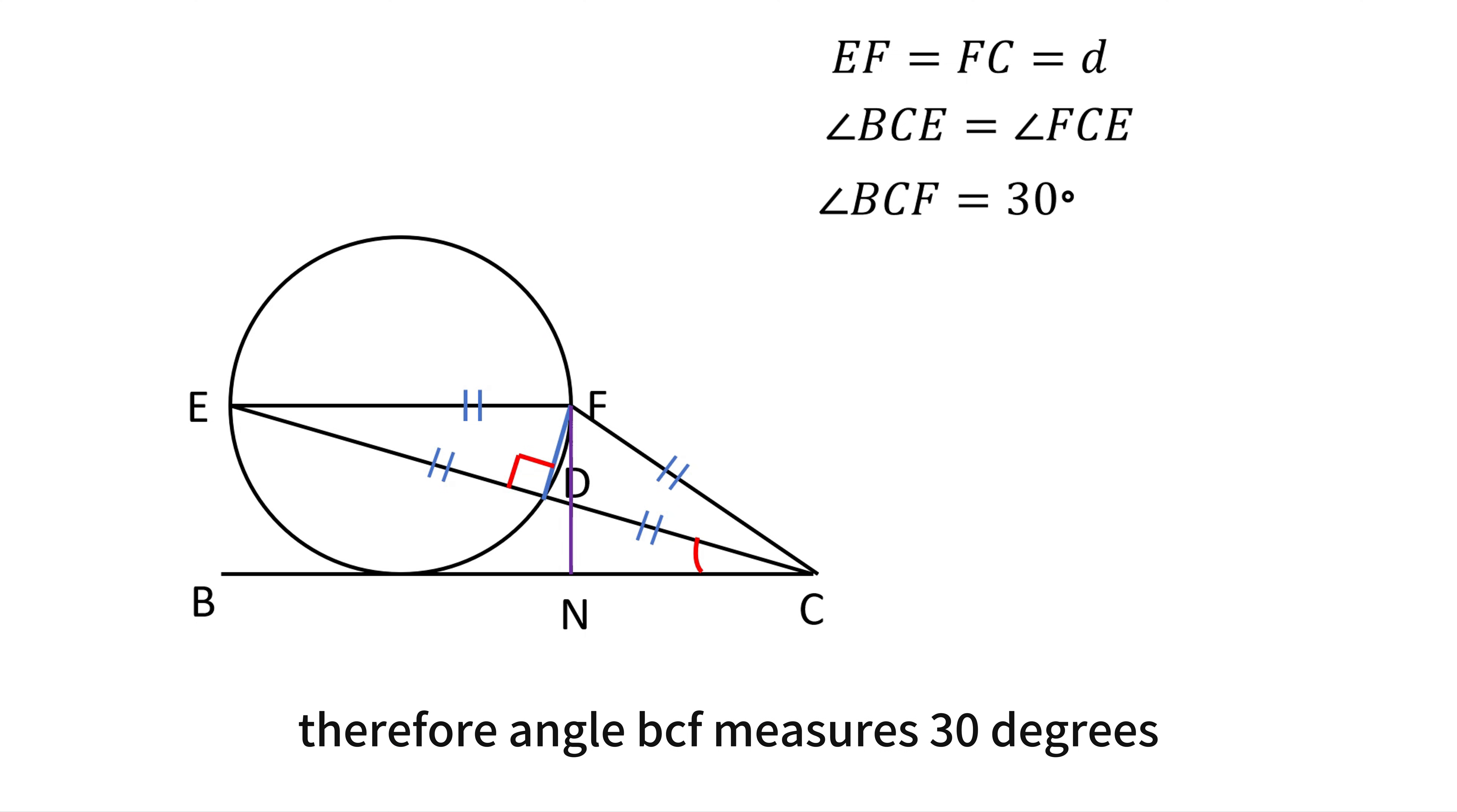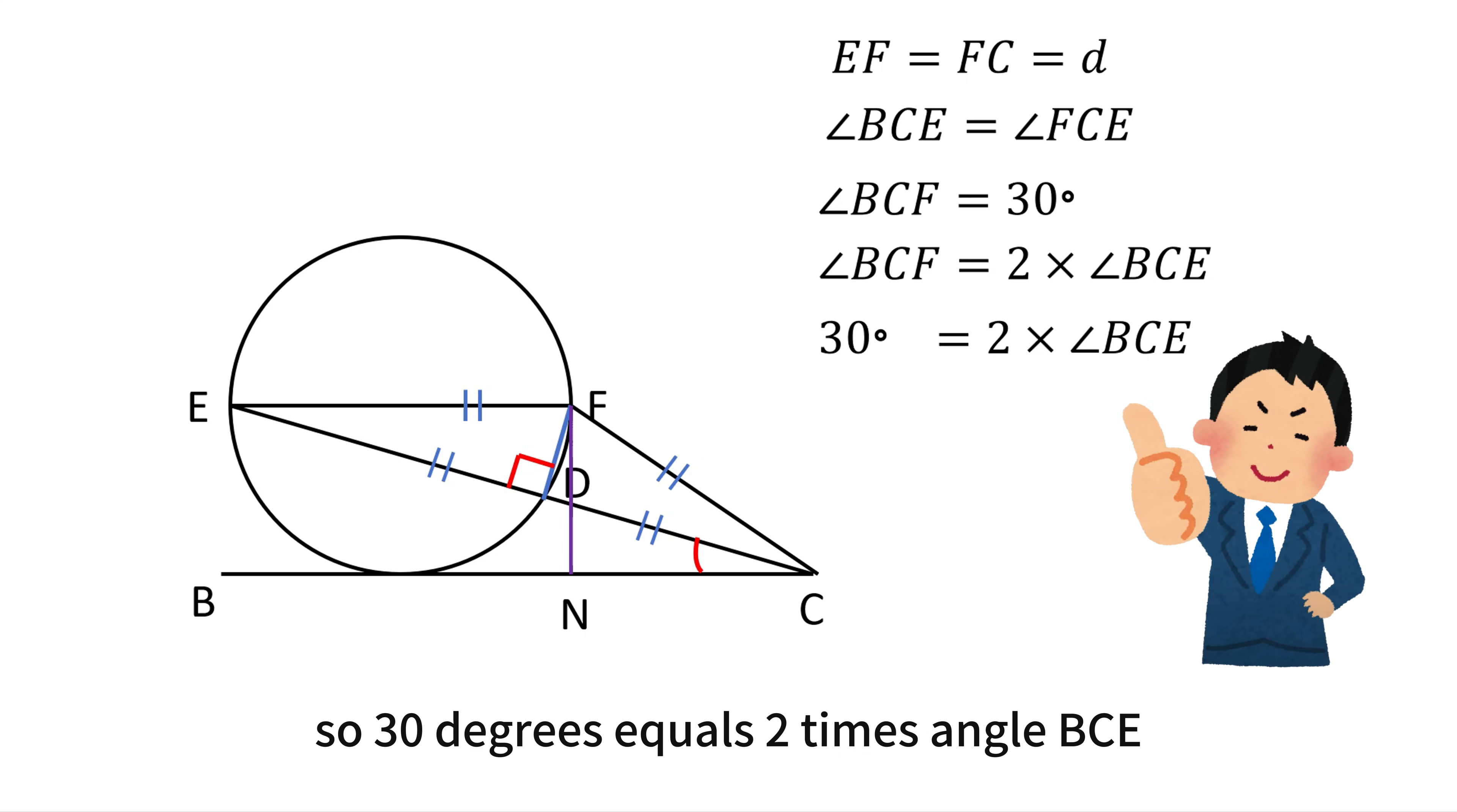Finally, notice angle BCF consists of angle BCE and angle FCE. Since angle BCE equals angle FCE, we have angle BCF equals 2 times angle BCE. So, 30 degrees equals 2 times angle BCE, meaning angle BCE must be 15 degrees.